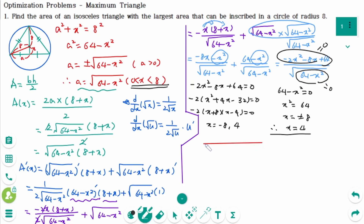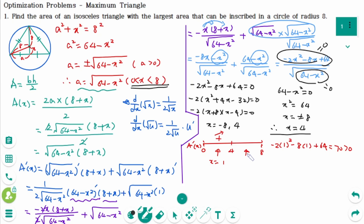On the number line between 0 and 8, with 4 marked: checking A prime of x. The denominator of A prime is always positive, so we check the numerator only. At test value x equals 1: minus 2(1) minus 8(1) plus 64 equals 70, which is positive. At test value x equals 5: minus 2(25) minus 8(5) plus 64 equals minus 26, which is negative. So A prime changes from positive to negative at x equals 4, confirming a maximum.